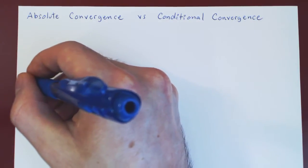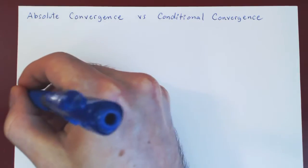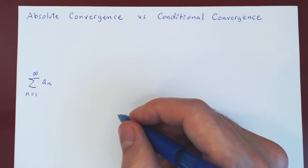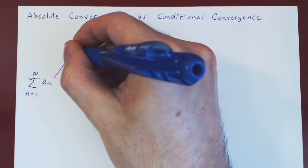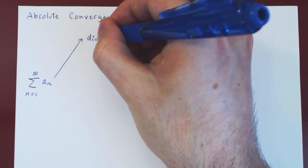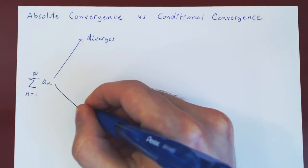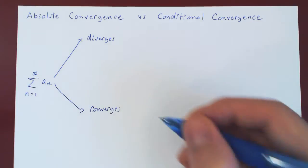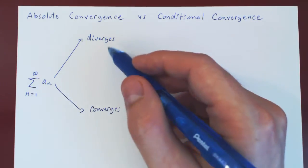If we look at the initial series — summing aₙ from 1 to infinity — then there are only two options: the series either diverges or the series converges. Now if the series diverges, it's the end of the story; there's nothing more to be said.